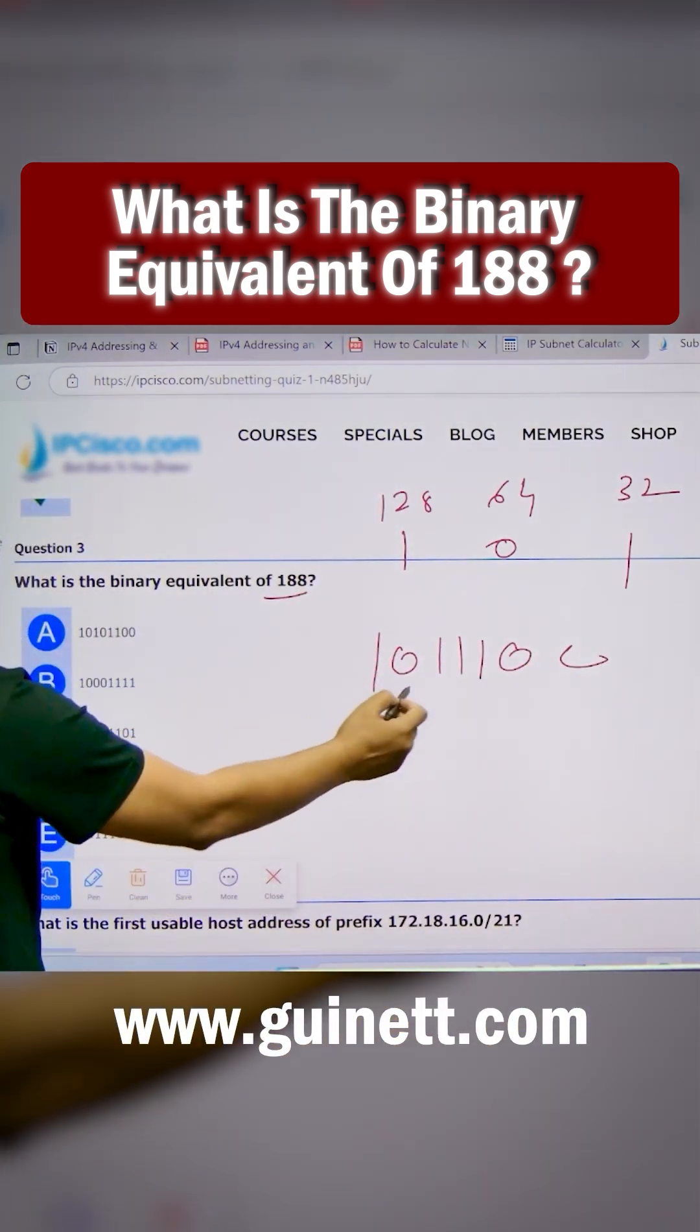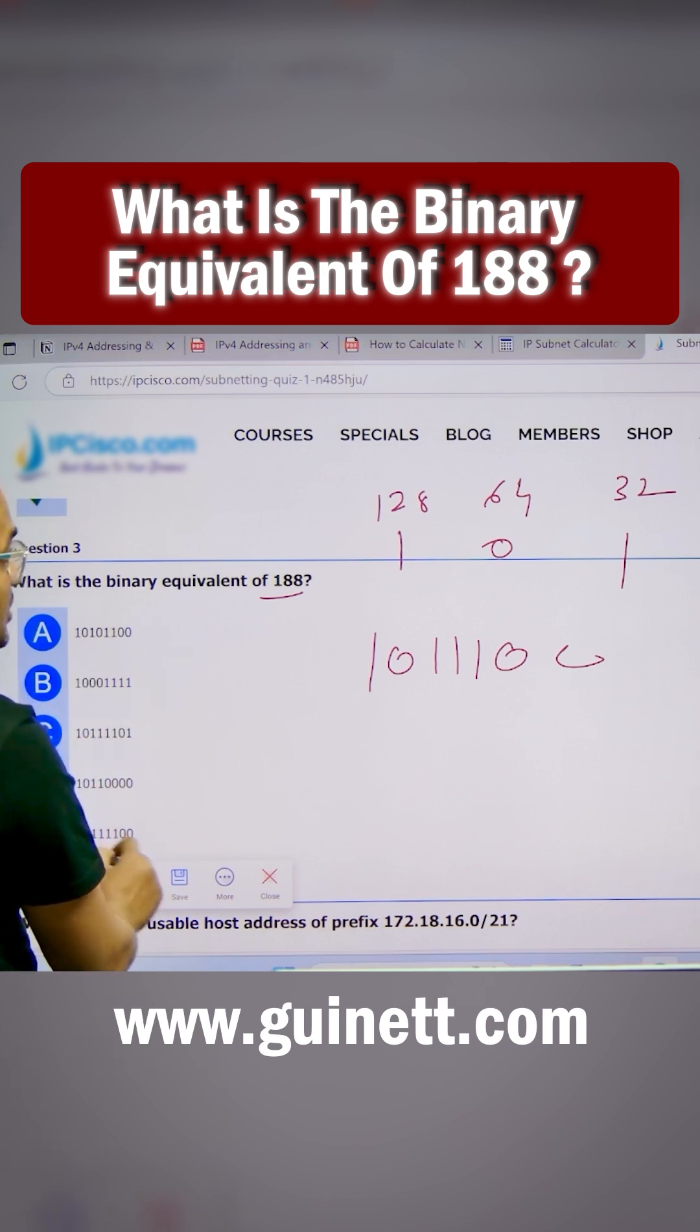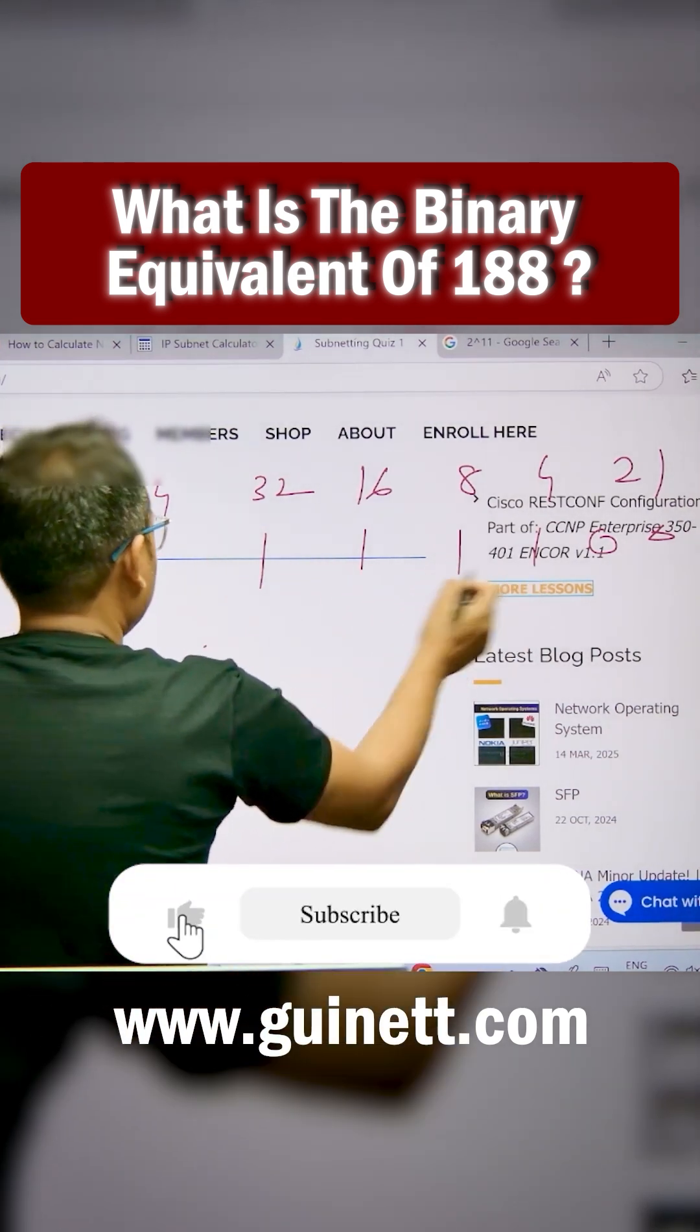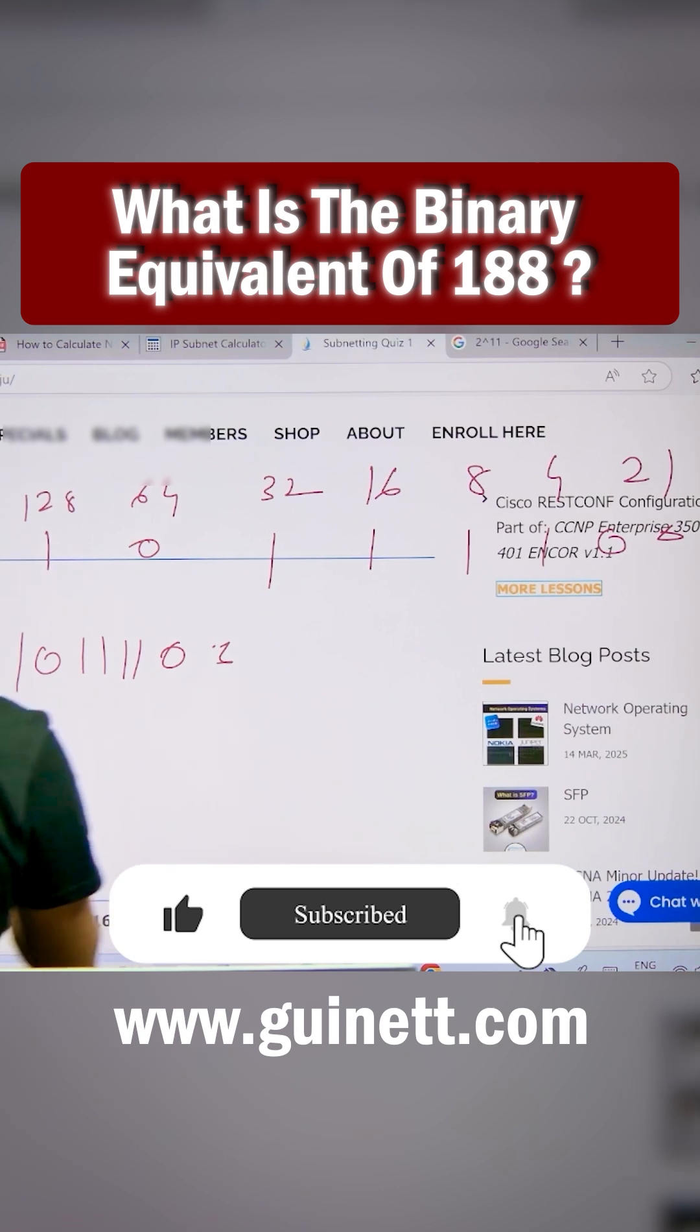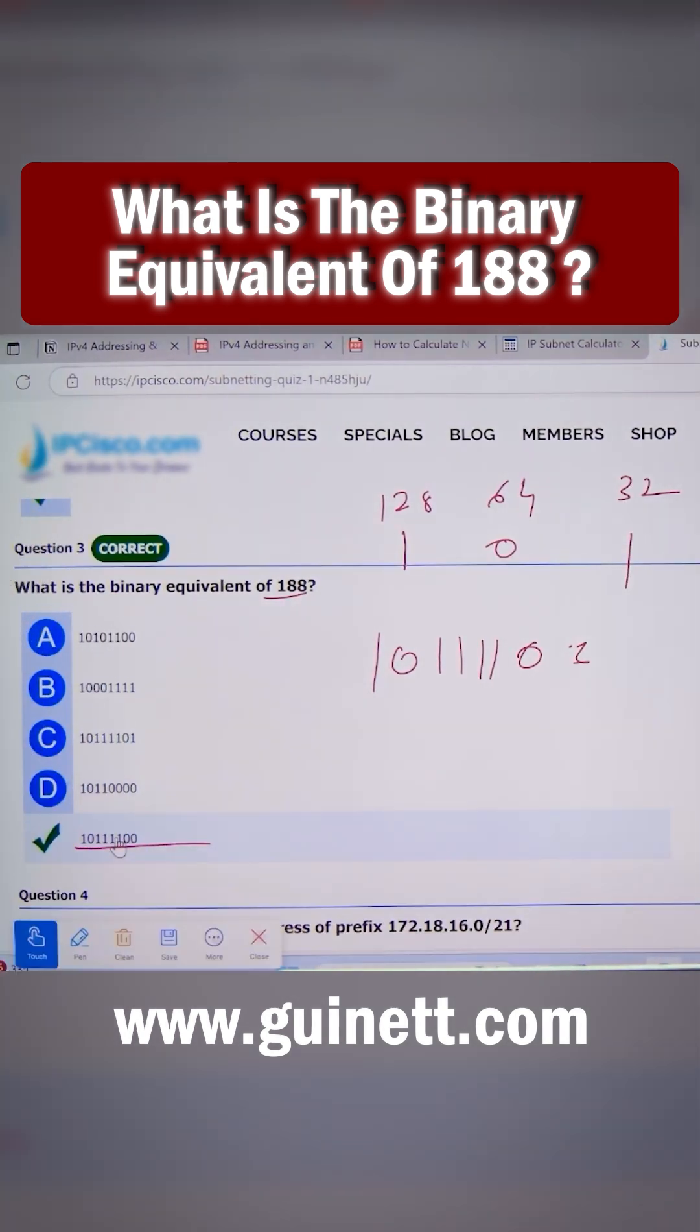Do you have the answer? 1, 0, triple 1... sorry, four 1s, not triple 1. We have 1, 0, 1, 2, 3, 4, okay, 0, 0. So I believe this is the correct answer. E is the correct answer. Let me check it. Yeah, it's the correct answer.